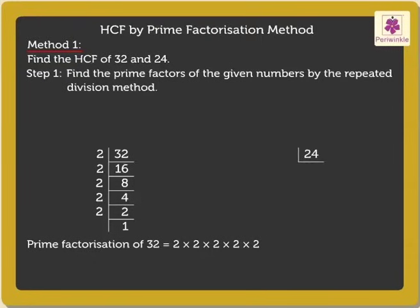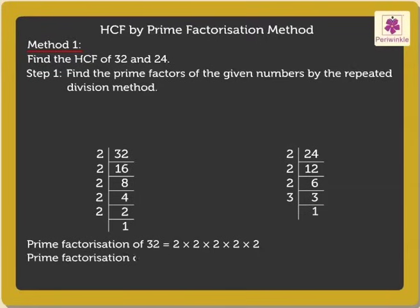Now, find the Prime Factors of 24. Dividing 24 by 2, we get 12. Now, divide 12 by 2 to get 6. Divide 6 by 2 to get 3. 3 is a prime number, so we divide it by itself and get 1 as the quotient. Thus, the Prime Factorization of 24 is 2 × 2 × 2 × 3.